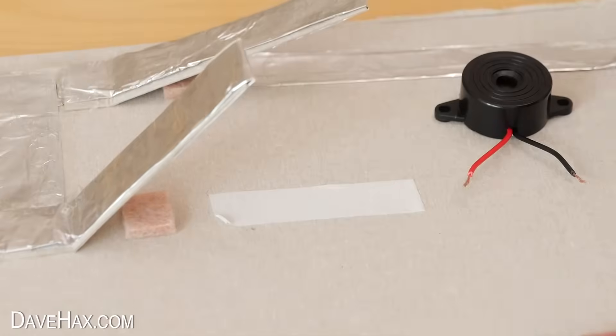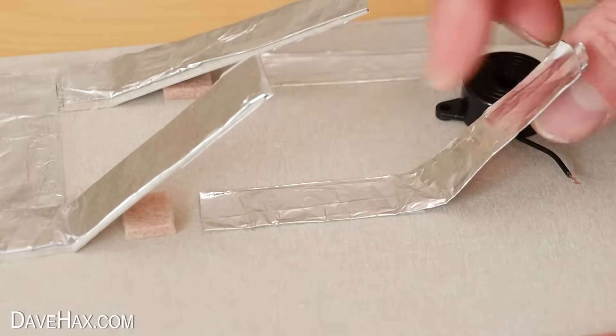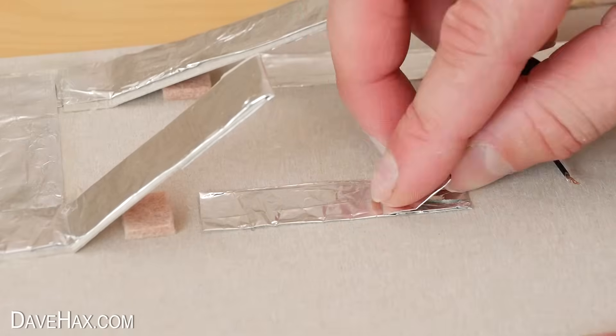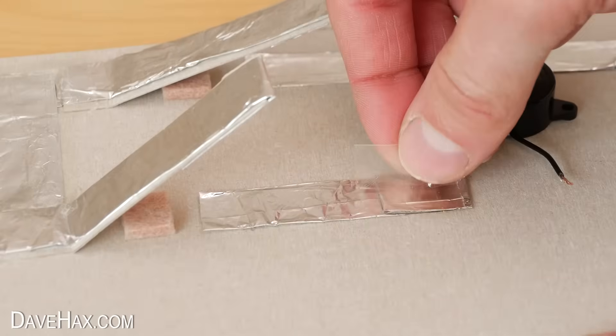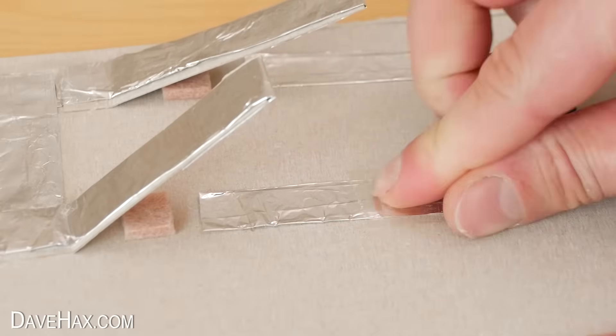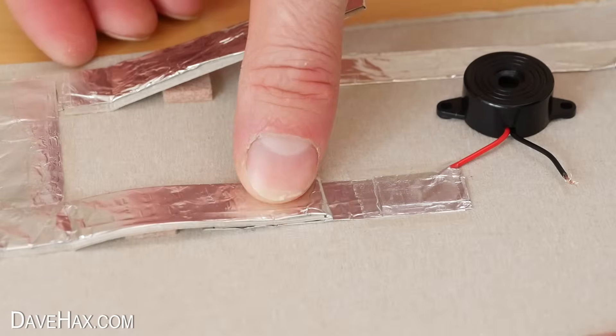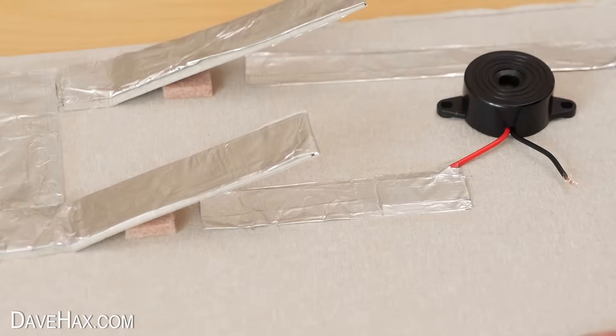And I'm using some double-sided tape to hold it in place. Next I'm using tape and foil again to continue building the circuit. And I'm pinching the buzzer wire between layers of foil. Then I'm holding it tightly in place with a strip of tape making sure the tape doesn't cover the foil underneath the switch as this would stop the switch being able to make an electrical connection.